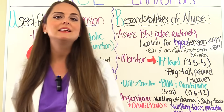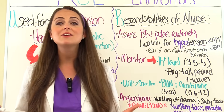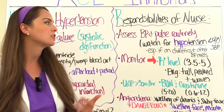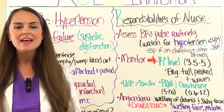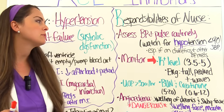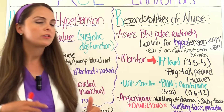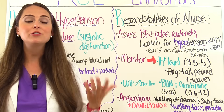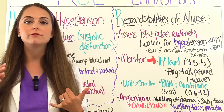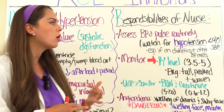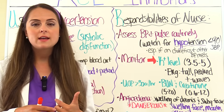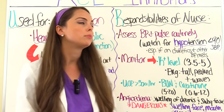Now let's talk about the responsibilities of the nurse. Whenever a patient is on an ACE inhibitor, you're going to monitor their blood pressure and pulse routinely. With ACE inhibitors, there's a risk of hypotension where the systolic is less than 90 — and that risk increases if the patient is also on diuretics or other blood pressure medications, which is common in cardiac patients.